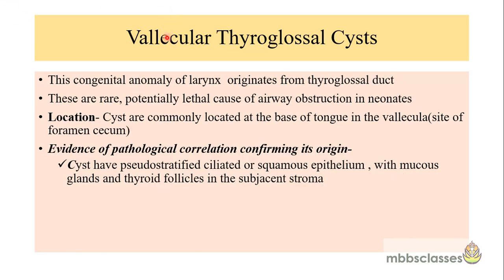The first component of the congenital laryngeal cyst is the vallicular thyroglossal cyst. This anomaly originates from the thyroglossal duct. It is a rare anomaly of the larynx but it can cause potentially lethal airway obstruction in neonates. The location of this cyst is at the base of the tongue in the vallicular area, because the thyroglossal duct — if you see the embryology — arises from the foramen cecum.